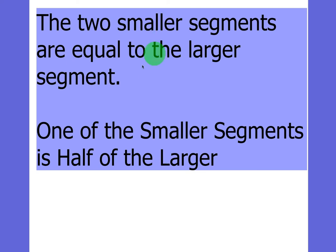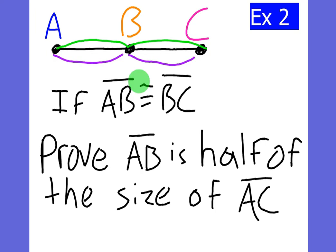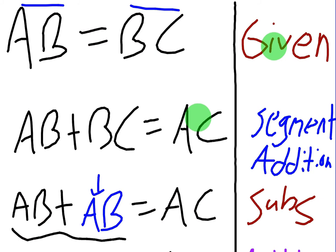So how can we convert this to a math expression? The two smaller segments are equal to the larger. Well, you can just write AB plus BC equals AC. That's the next thing we're going to write in our proof. And what's the reason for that? It's called segment addition or segment sum. Okay? So again, there's a lot of different ways that you can articulate that.